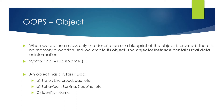An object always has three things: state, behavior, and identity. State is like what breed your dog has, what's the age, what's the height. Behavior is something like whether the dog is barking, sleeping, or running. And the third one is identity, which is the name. These are the things associated with an object.